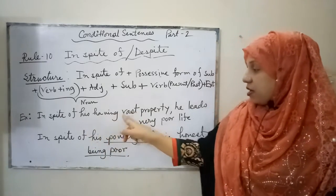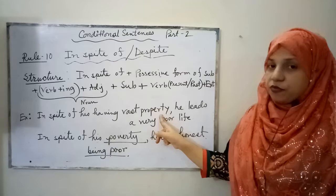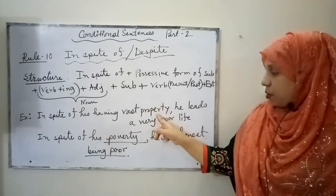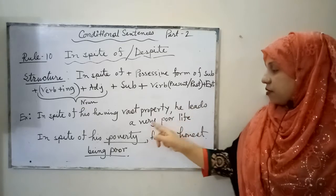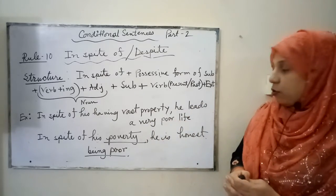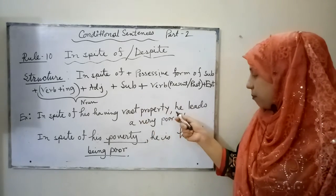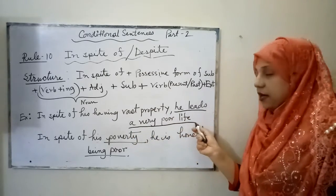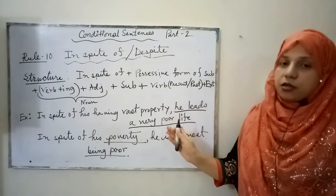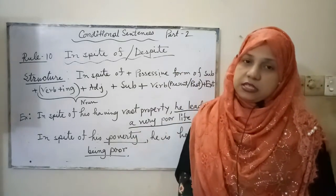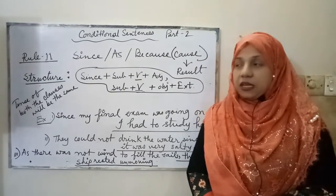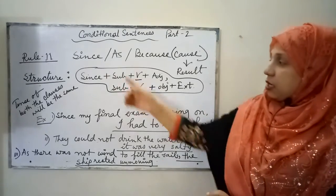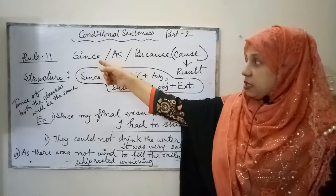Another example: 'In spite of his having vast property, he leads a very poor life.' You can use 'despite' instead of 'in spite of.' Most probably you will be given one part and the other part will be blank — this is how you solve this type of sentence. Next comes rule number 11.